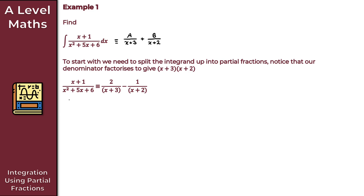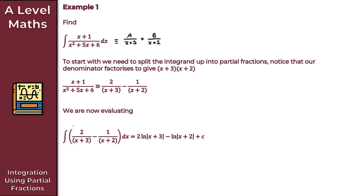A is equal to 2 and B is equal to minus 1. So we can now rewrite our integrand — this algebraic fraction — into its equivalent partial fraction decomposition. What we're now evaluating is the integral of 2 over (x + 3) minus 1 over (x + 2), integrating with respect to x. Evaluating this integral is much easier than evaluating it in its original form; obviously they're equivalent, but integrating this is much easier.